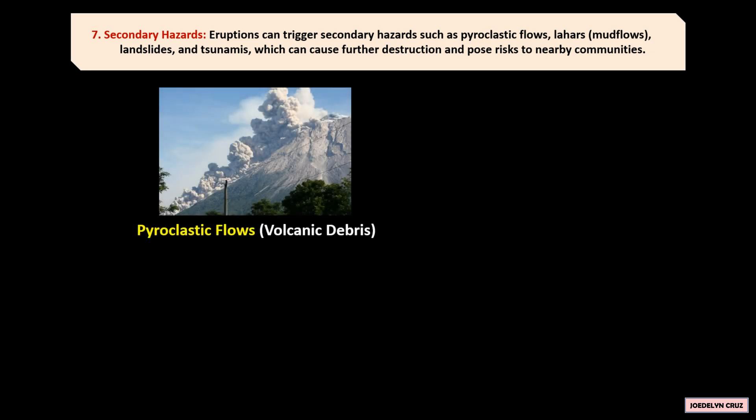Secondary Hazards. Eruptions can trigger secondary hazards, such as pyroclastic flows or volcanic debris like ashes, rock fragments, and hot gases.